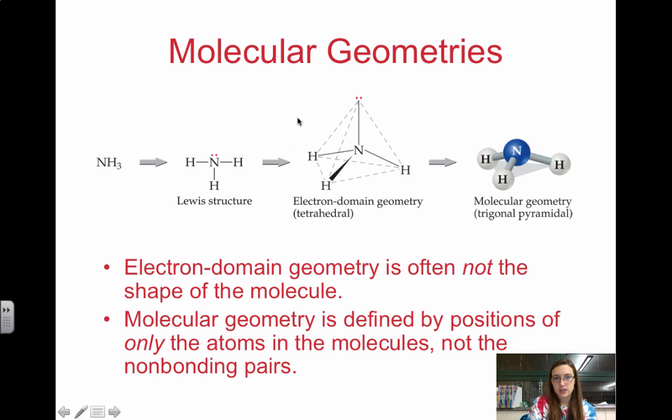For instance, notice ammonia. We have NH3, but we have this lone pair up here. So the electron domain geometry is tetrahedral, but the molecular geometry is actually trigonal pyramidal, because these lone pairs push down on the hydrogen atoms to minimize repulsion, and so the molecular geometry is different from the electron domain.